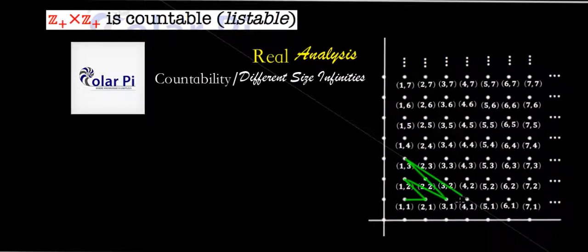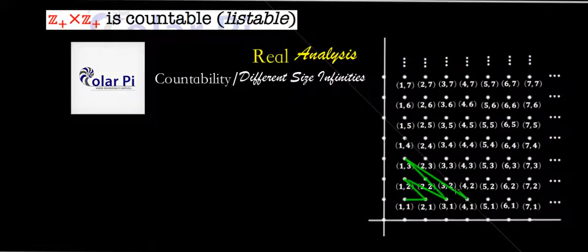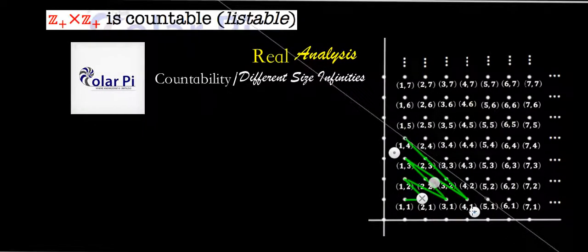Okay? And then from 4, 1, we go in the other direction to 1, 4. And that way we go through 3, 2, and 2, 3. And continuing in this manner, we can go through each one of them and therefore list each one of them one at a time, showing that they are countably infinite.